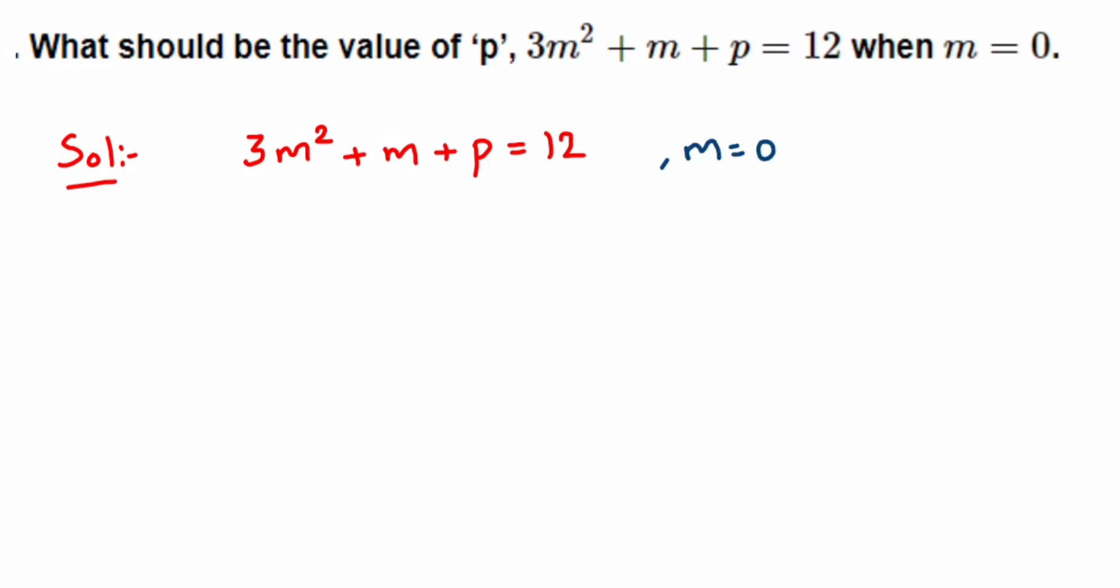They have given that m = 0, so we're going to substitute m = 0 in place of m. By doing that, we'll get 3(0)² + 0 + p = 12. We know that 0² is 0, right?